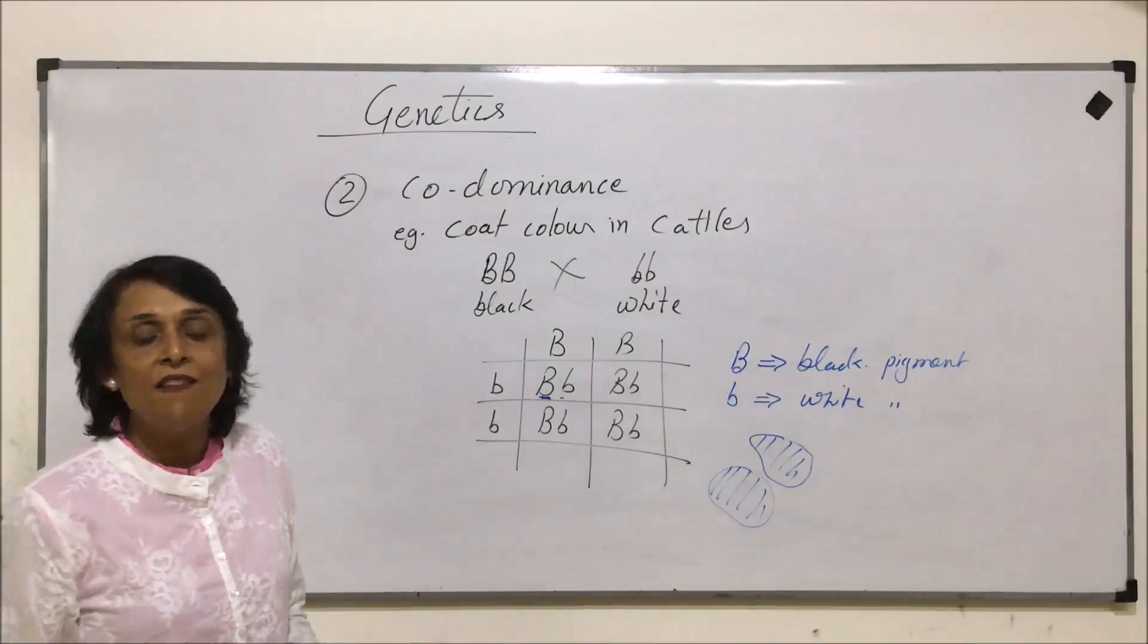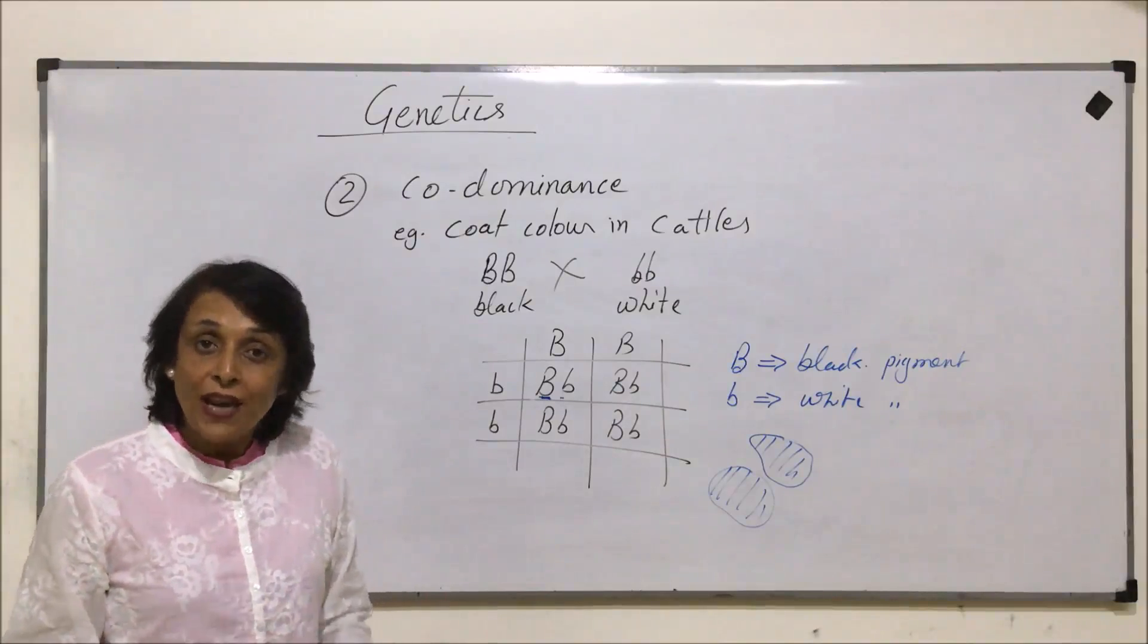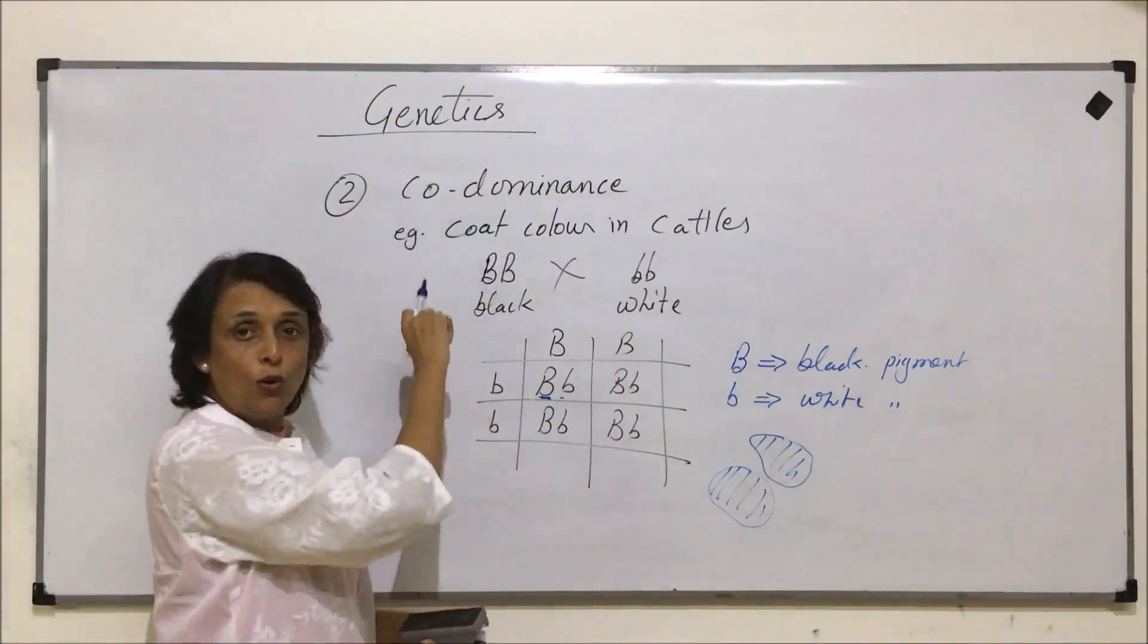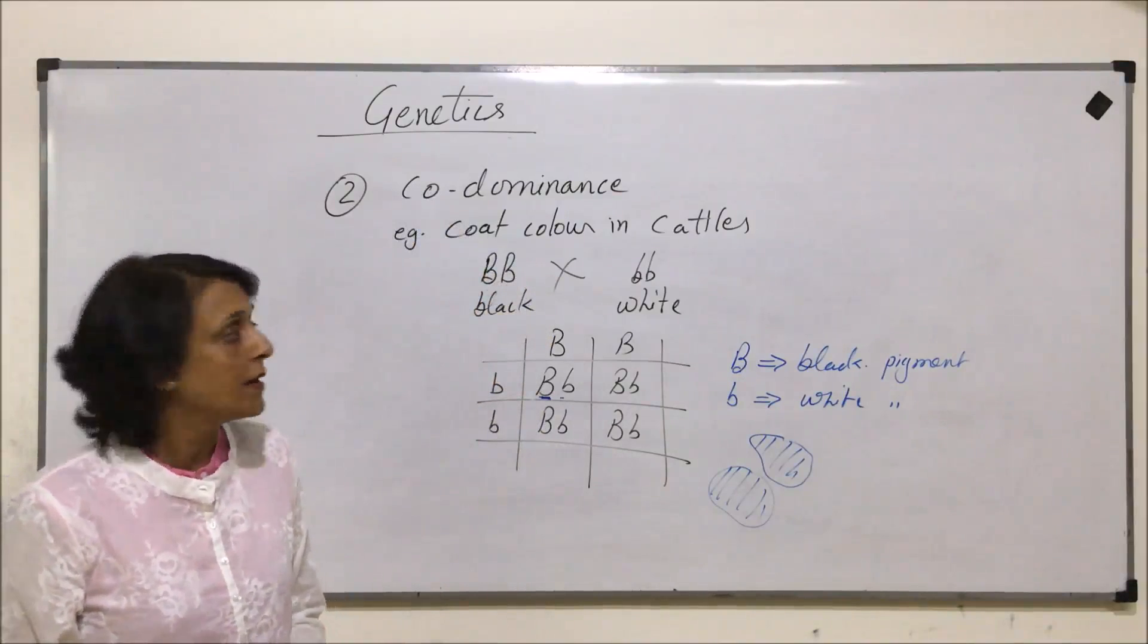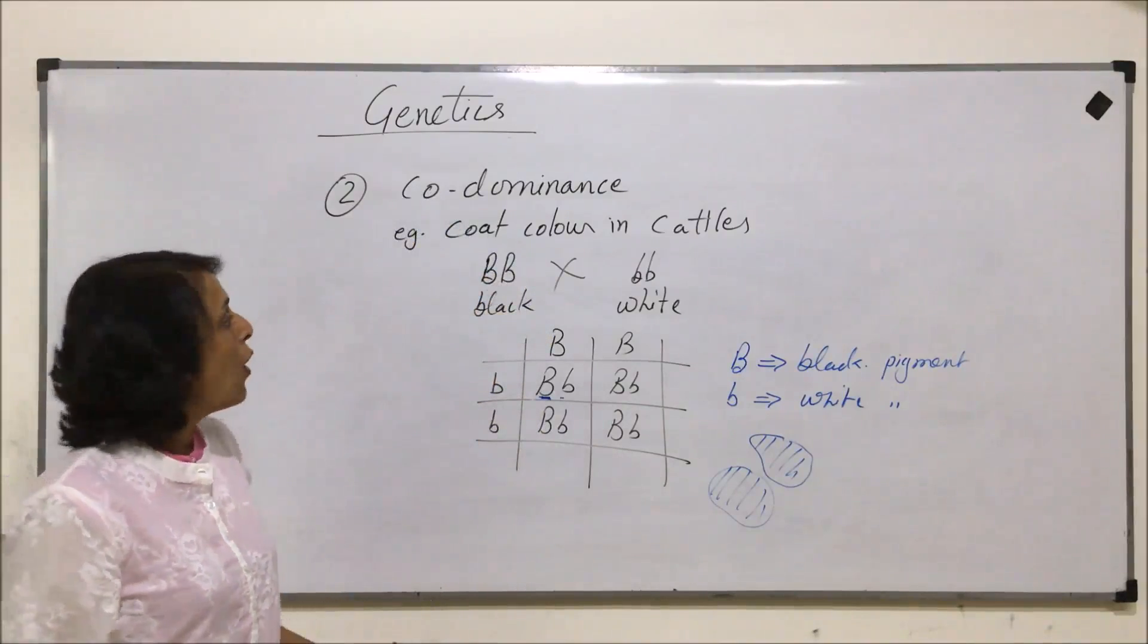That is why it's called co-dominance - both are dominating together. One more example of co-dominance is blood group in human beings.